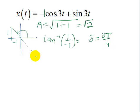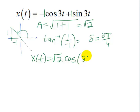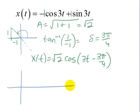Now we can express X of t as square root of 2 cosine 3t minus 3 pi fourths. If we want to plot this, our amplitude is square root of 2, about 1.4, about right here.